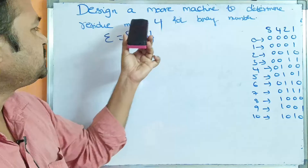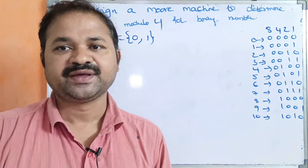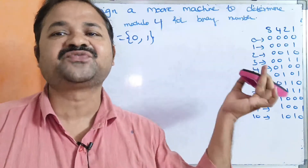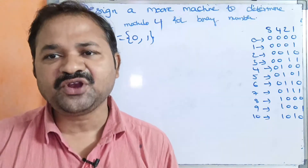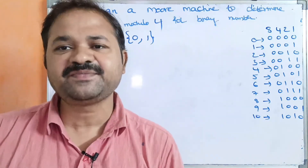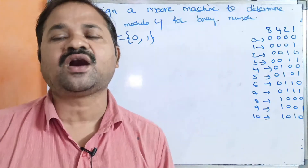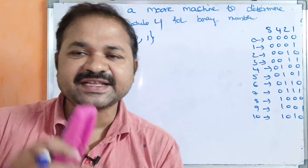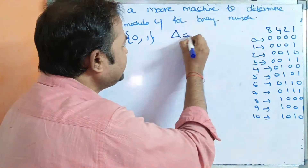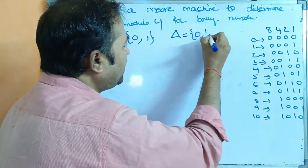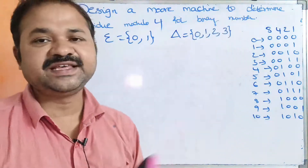Our target is to perform residue modulo 4. If we divide any number by 4, the remainder we get is 0, 1, 2, or 3 — maximum these four digits only. So the output alphabet delta is equal to {0, 1, 2, 3}, because maximum we will get these four remainders only.